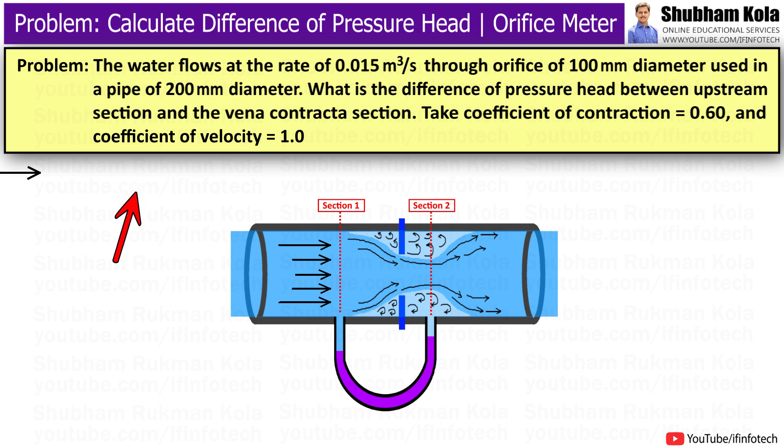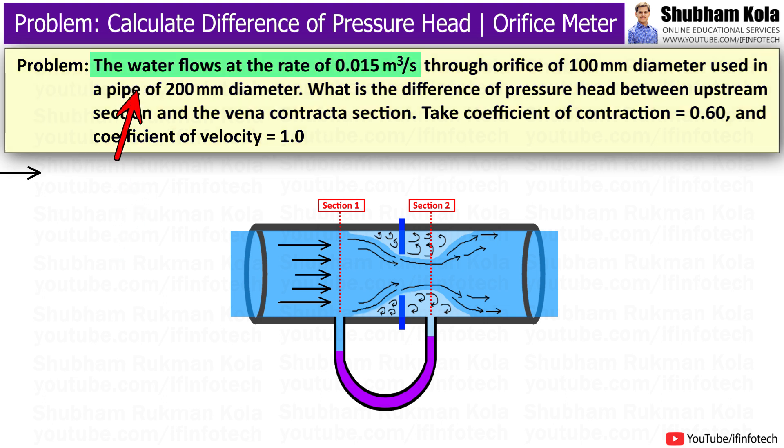The problem statement is: the water flows at the rate of 0.015 m³ per second through an orifice of 100 mm diameter used in a pipe of 200 mm diameter. What is the difference of pressure head between upstream section and the vena contracta section? Take coefficient of contraction equal to 0.60 and coefficient of velocity equal to 1.0.